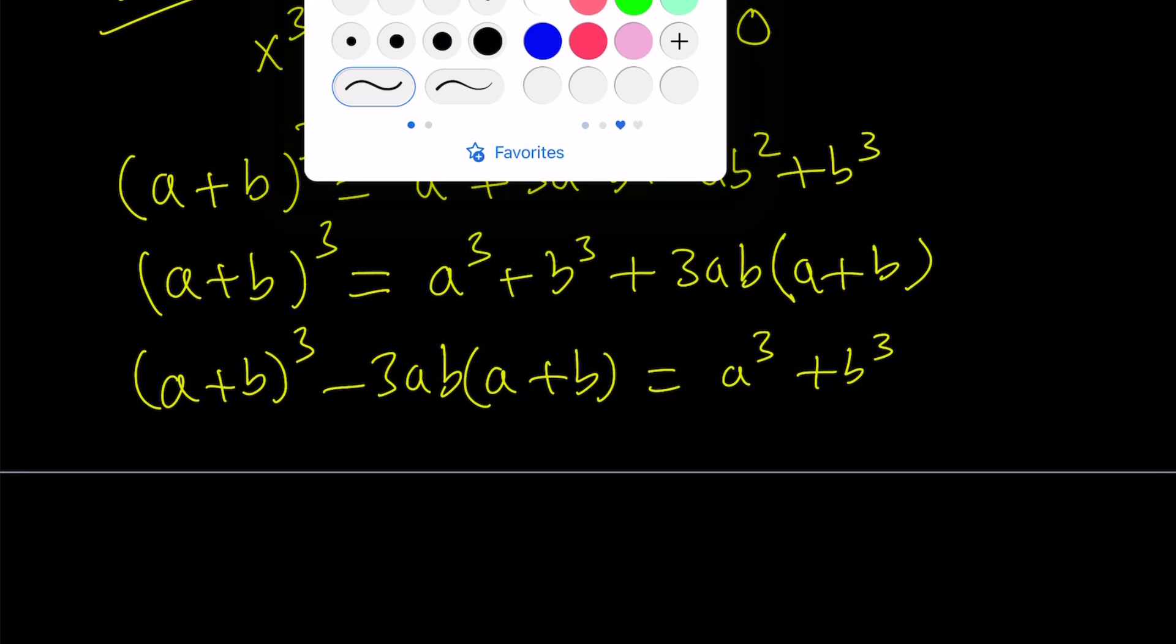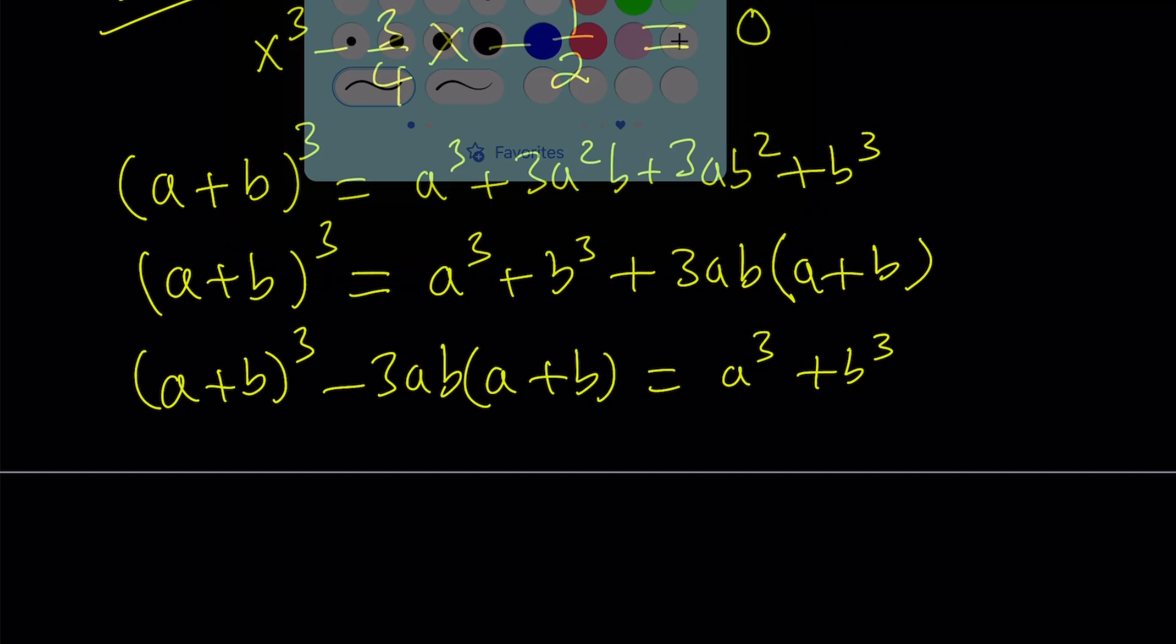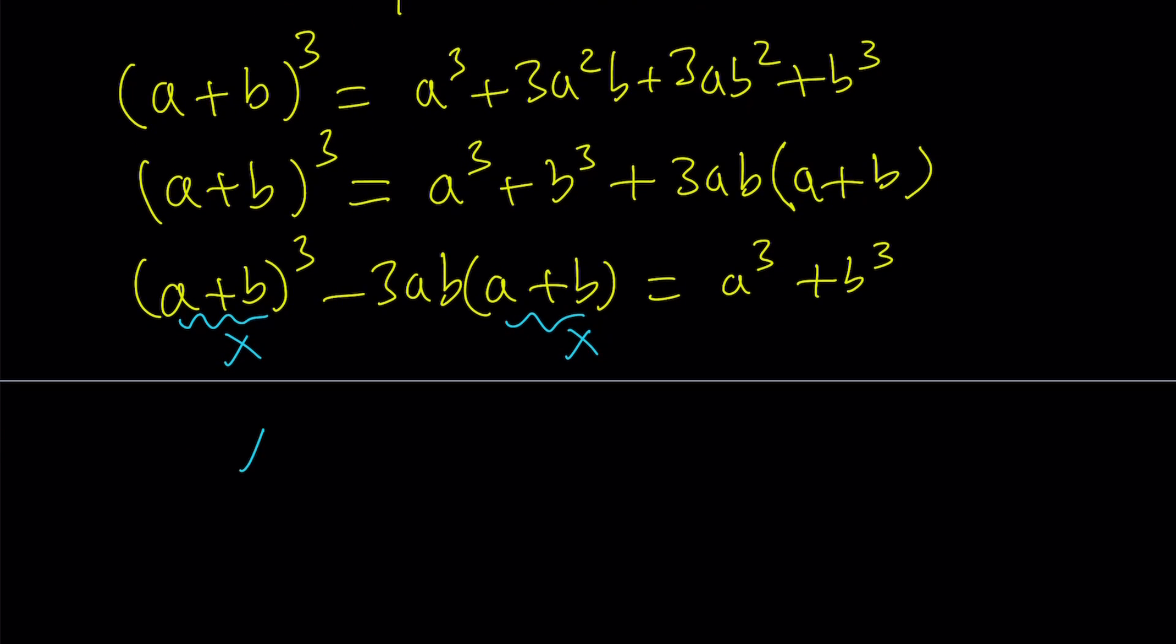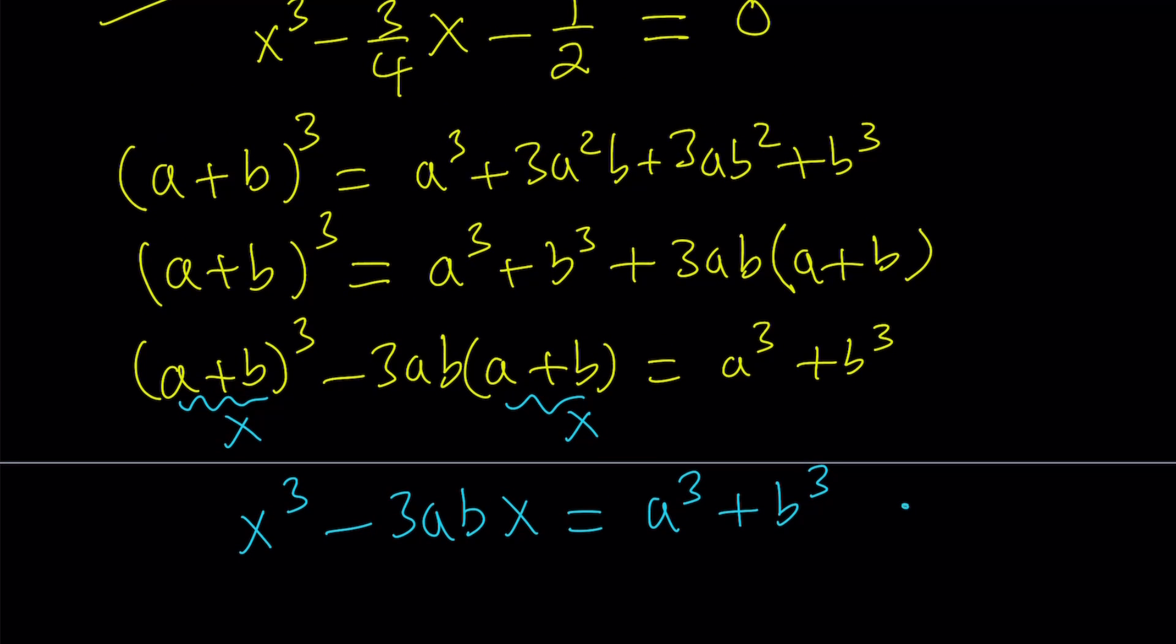So here's how the method works. I'm going to call this my x. So a plus b is equal to x. And then by comparing this equation to the other one, so I have x cubed minus 3abx equals a cubed plus b cubed. You can also put a cubed plus b cubed on the left hand side, but I just didn't want to subtract it.